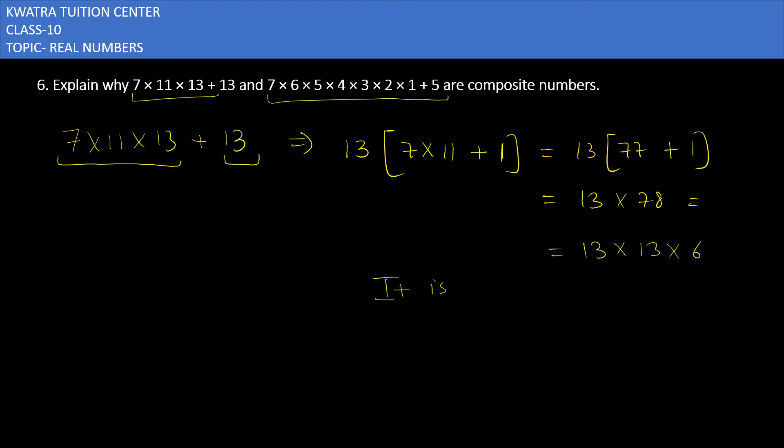Same we have to do with the second number. Second number, how to do it: 7 into 6 into 5 into 4 into 3 into 2 into 1 plus 5. So here you can see this is my complete first number, this is the second number. 5 can be taken common.